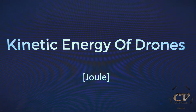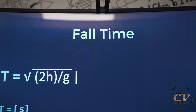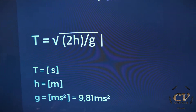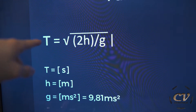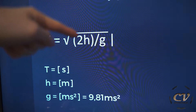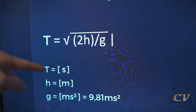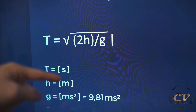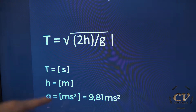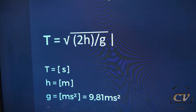So here we have it: kinetic energy of drones, measured in Joules. Let's start with the fall time. Fall time t is the square root of 2 times h divided by g. The unit for time is seconds, the unit for height is meters, and the unit for g, which is the earth acceleration, is meters per second squared, which is 9.81.